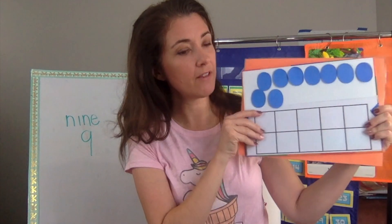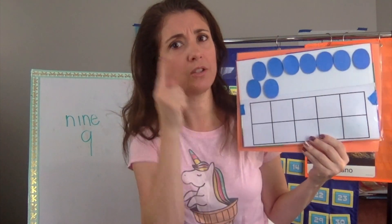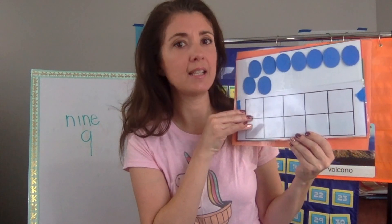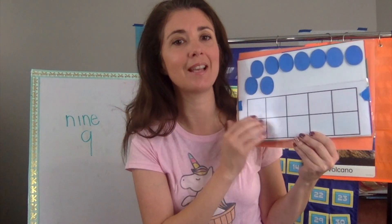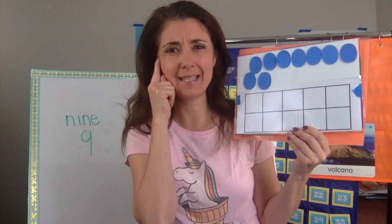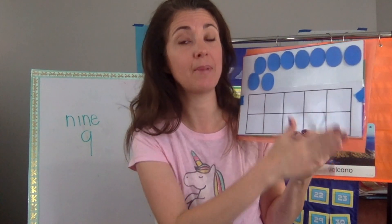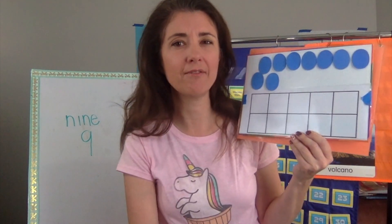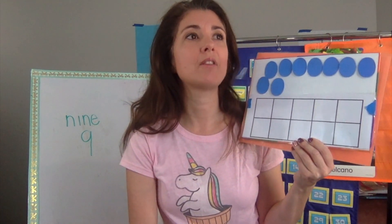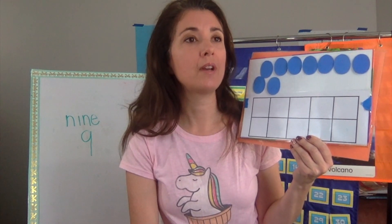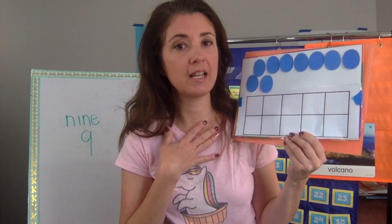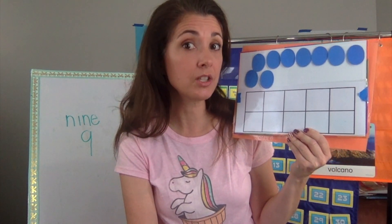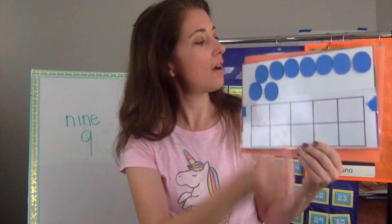Let's put our ovals in our 10 frame. Before we begin, I want you to think for a moment. If I have 10 spaces in my 10 frame, and I'm going to put nine ovals in them, can you make a prediction of how many spaces will be left over when I put all nine ovals in my 10 frame? Let's think for a minute. Okay, I have my prediction. I predict there might be one space left. Is that your prediction? Let's find out if we're right.